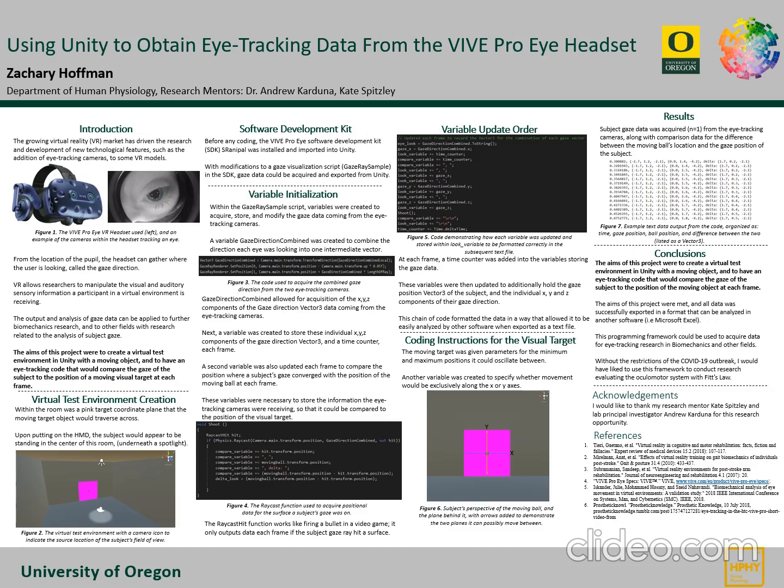I also encoded specific instructions for how the visual target ball would be moving throughout the virtual environment. The target was given parameters for the minimum and maximum positions that it could oscillate between on the frame behind it. I created another variable where, if true, it specified that the ball would only move along the x-axis of the pink coordinate plane, and if false, it would only move along the y-axis.